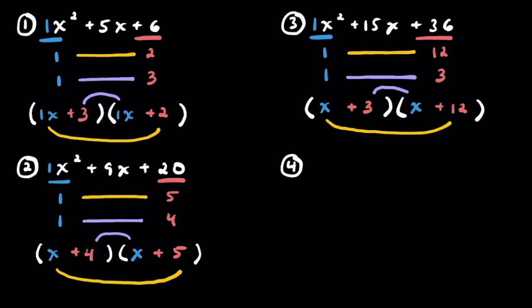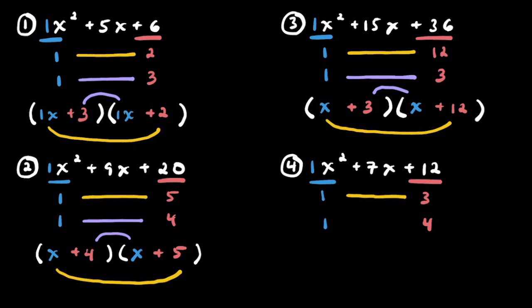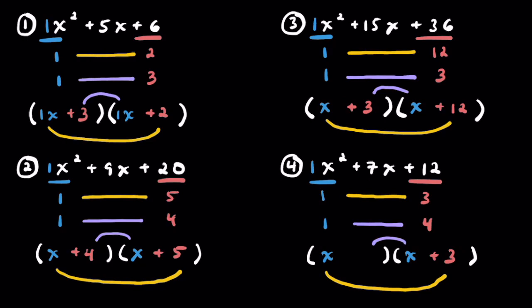Problem 4: x squared plus 7x plus 12. Leading coefficient of 1, positive 12. Factors: 1 and 12, 2 and 6, 3 and 4. Three and four make the most sense because they add to get 7. The outers pair to give plus 3, and the inners give plus 4. So our answer is (x + 3)(x + 4).